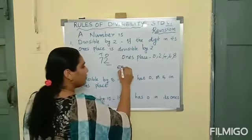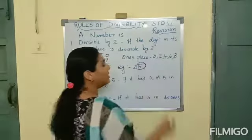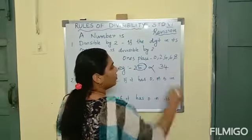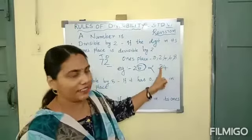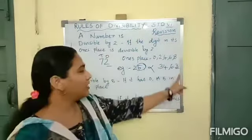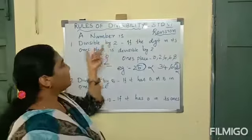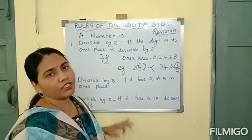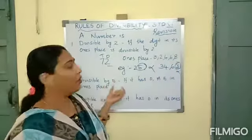For example, 25 — can you divide this by 2? No, because in the ones place it is 5. So you can't divide by 2. If you take 34, in ones place 4 is there, so it is divisible by 2. If you take 63, 3 is in ones place, so this number cannot be divided by 2. So for divisibility by 2, check the ones place for 0, 2, 4, 6, or 8.